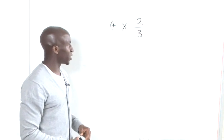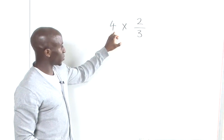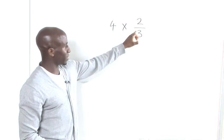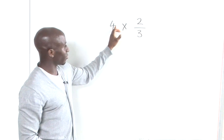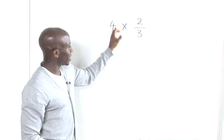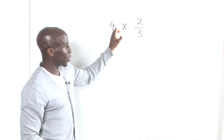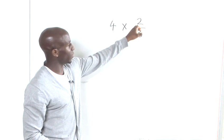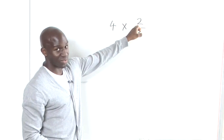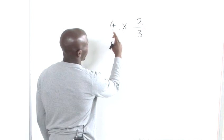Okay, so what we would need to do when we multiply this whole number by this fraction here is to directly understand that this integer or whole number will interact only with the numerator of this fraction.